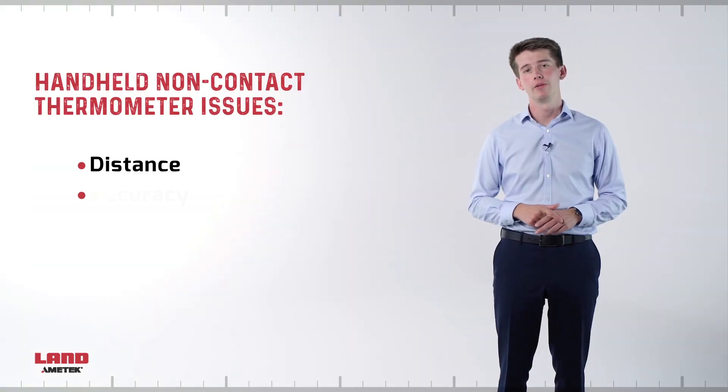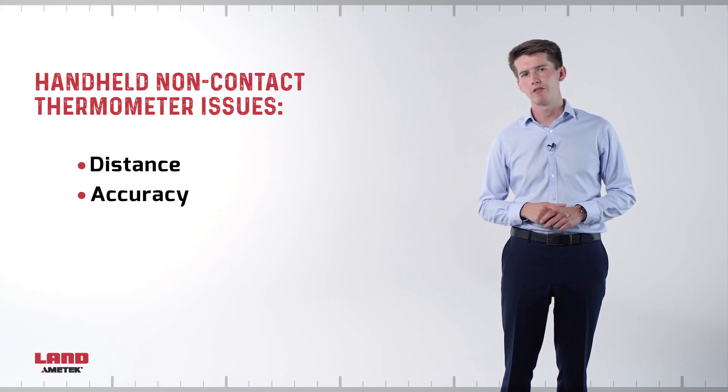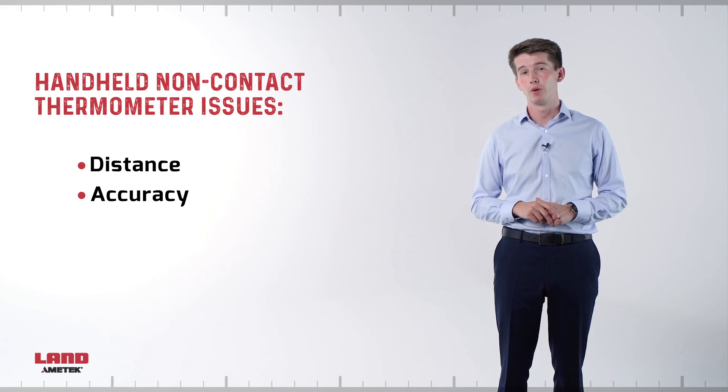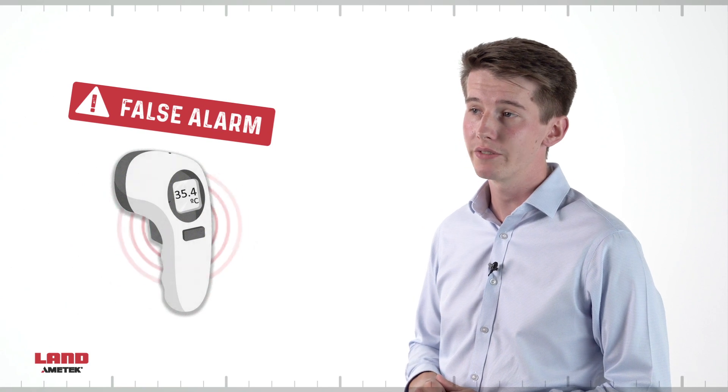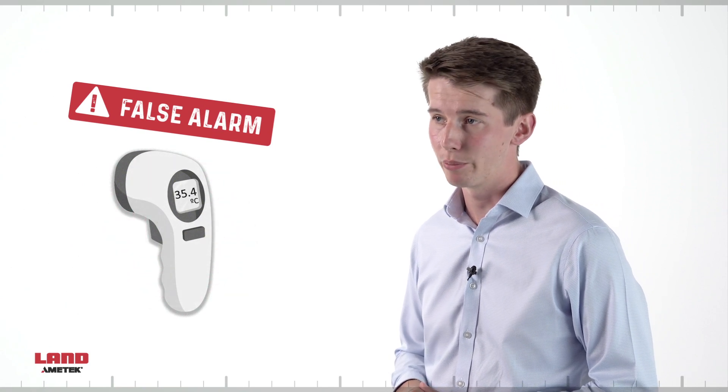The second issue is accuracy. Portable infrared thermometers often have a measurement uncertainty around 2 degrees Celsius or 3.6 degrees Fahrenheit. This is likely to create a lot of false positives and negative readings when you are trying to detect elevated skin temperatures.